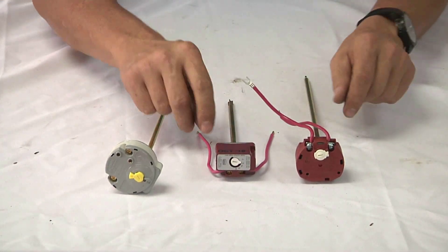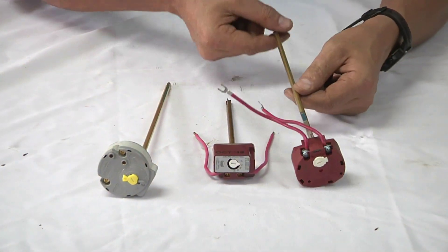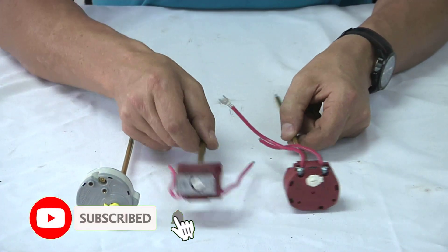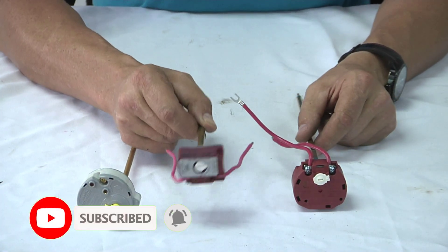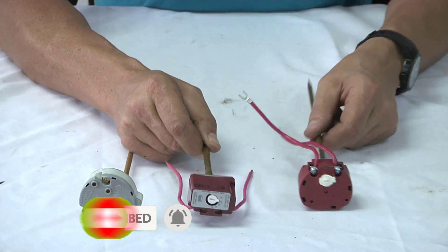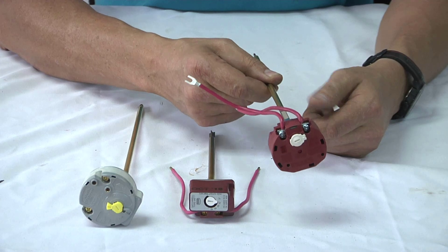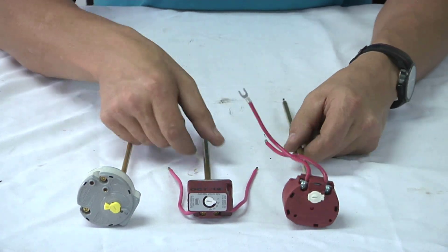The difference between the two thermostats: as you can see, this probe here is much longer than this probe. The short one is used when you have an element at the side of the geyser because this thermostat would never fit inside there. More will be discussed in the video tutorials.